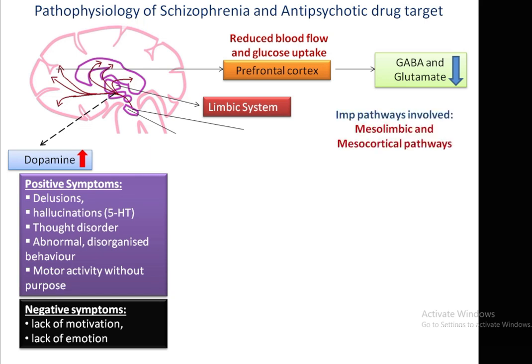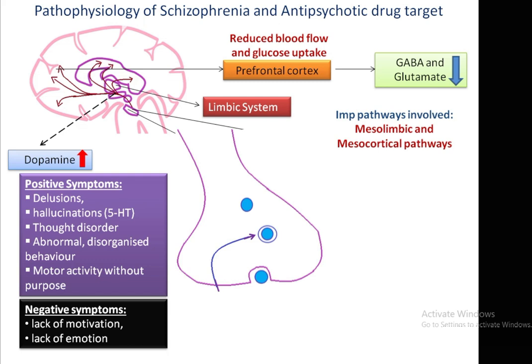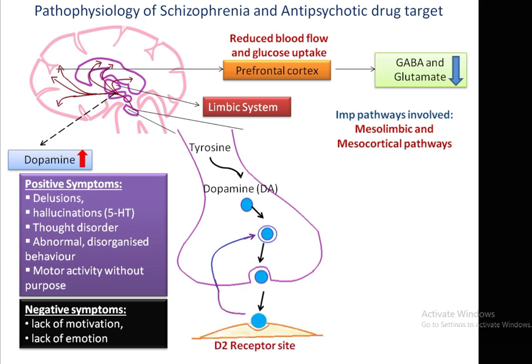Overall, the mesolimbic and mesocortical pathways are directly involved in the pathophysiology of schizophrenia, with an increase in the level of dopamine. In the neurohemeral transmission during pathophysiology, dopamine is synthesized from tyrosine, stored in vesicles of the neuron, and when released at the synaptic area at the D2 receptor site, most of the dopamine is reuptaken back, ultimately increasing its level in the mesolimbic pathways of the brain.